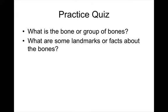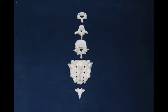Let's go ahead and practice. For each question, try to answer what bone or group of bones it is and recall some landmarks or facts. Pause the video if you need a moment to think. Number one: this is the vertebral column. From the top, we have cervical, then thoracic, then lumbar, then the sacrum, and then the coccyx made up of fused coccygeal vertebrae — listed from superior to inferior.